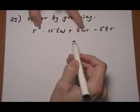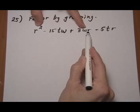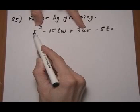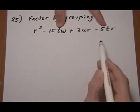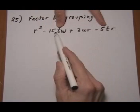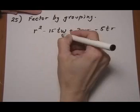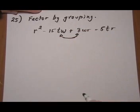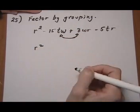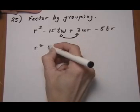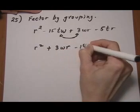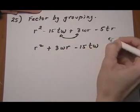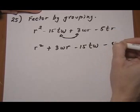And if I pair up those two, do they have a common factor? Yes. R and an R. Each of them has at least one R, so I'll be able to pull that out. And would those two have common factors? Yeah, they both have a five as a common factor and also a T. So let's go ahead and switch those two guys. So I get R squared. Remember the sign in front of it goes with it, so plus 3WR minus 15TW and minus 5TR just comes along.